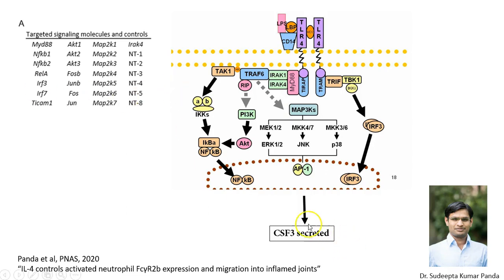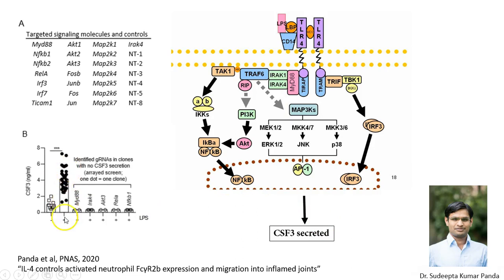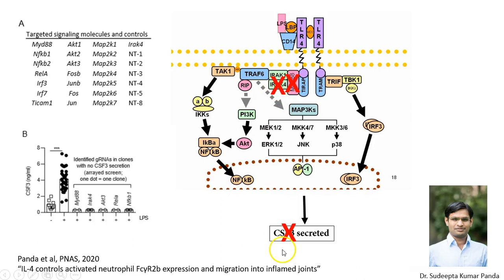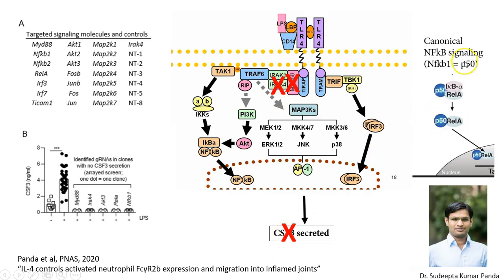He then added LPS, took supernatant after roughly 24 hours, and did an ELISA for CSF3 secretion. The cells produced robust CSF3 levels after LPS stimulation, but he could find some wells where there was no CSF3 secretion at all. When he sequenced those guide RNAs using simple Sanger sequencing, he could identify a couple of genes that when knocked out corresponded to cells not producing CSF3: MyD88 and IRAK4 — part of the receptor complex — suggesting these are the starting point; AKT3, possibly involved; and RelA and NFkB1, part of the canonical NF-κB pathway.